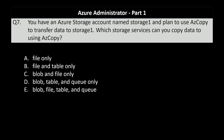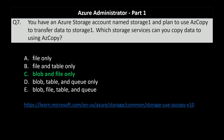Question number seven. You have an Azure storage account named Storage1 and plan to use AzCopy to transfer data to it. Which storage services can you copy data to using AzCopy? Options are: file only; file and table only; blob and file only; blob, table and queue only; or blob, file, table and queue. AzCopy is a command-line utility to copy blobs or files to or from a storage account. Using the latest supported version 10 of AzCopy, you can only copy files and blobs. Older versions supported table storage as well, but that version is deprecated and no longer supported by Microsoft, which is why the correct answer is option C — blob and file only. There is a link on screen to learn more about how AzCopy version 10 works.